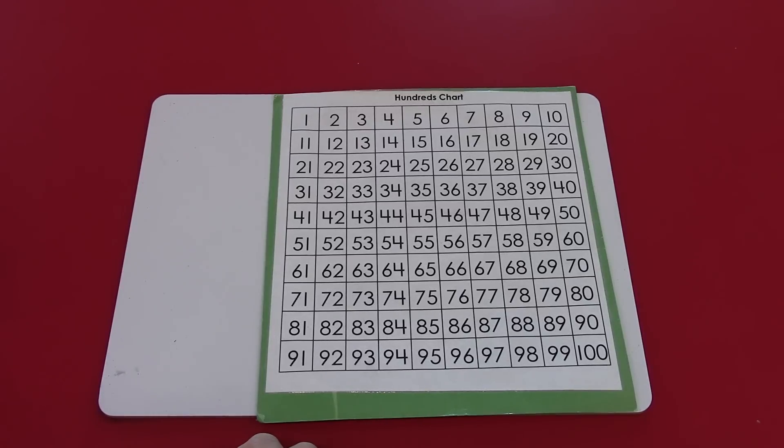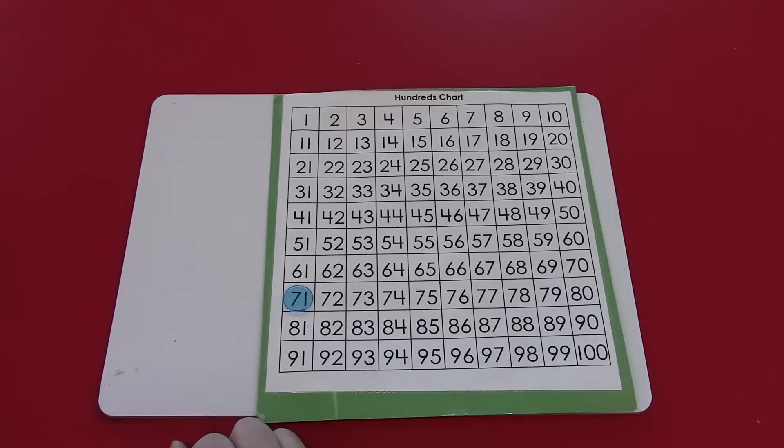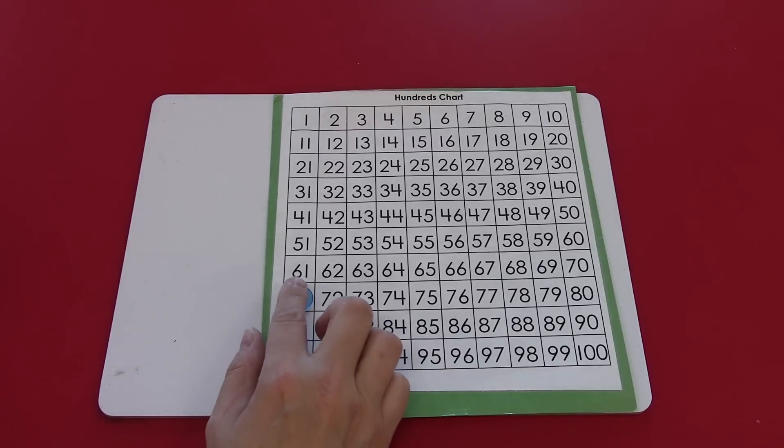In this video we are going to go over adding with a hundreds chart. You'll need a hundreds chart and some kind of marker like a penny or dime, or even better something clear like a game piece. Once you have those ready, you're ready to start.